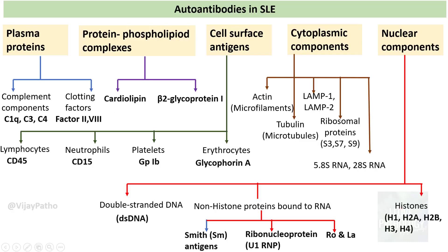A very quick recap of what we learnt in the last session: there were many autoantibodies in SLE. The classes include plasma proteins, protein-phospholipid complexes, cell surface antigens, cytoplasmic components, and nuclear components. We also learnt that anti-nuclear antibodies are very important in the pathogenesis of SLE, particularly antibodies to double-stranded DNA and anti-Smith antigen — these two are more specific for SLE.